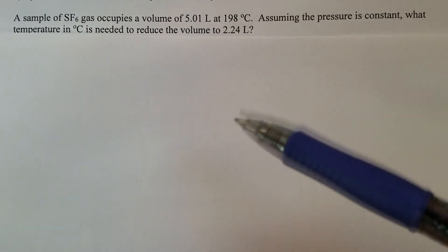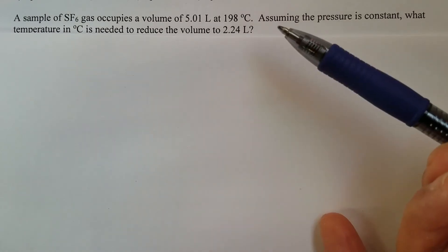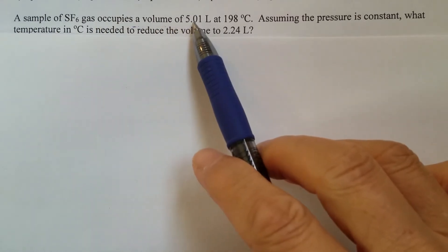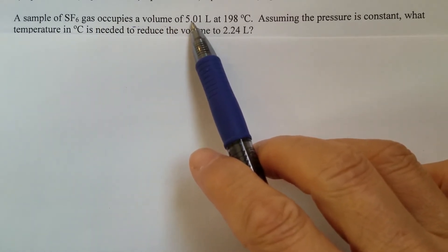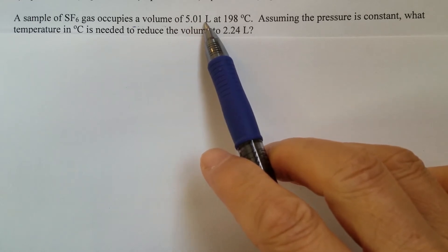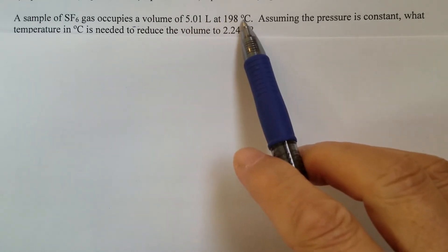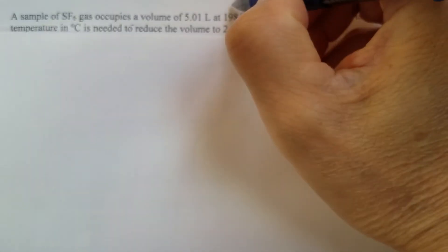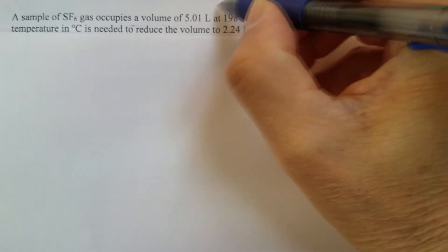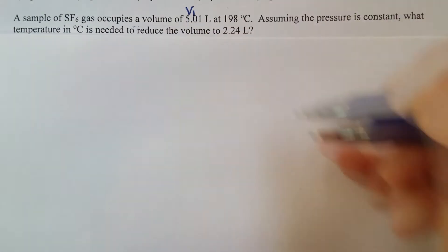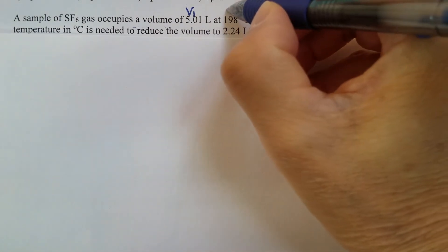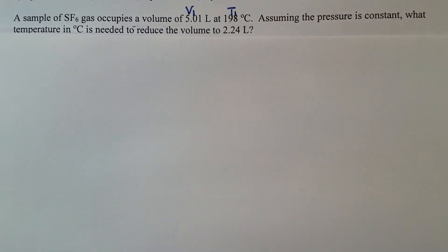Now let's analyze this question. So we have this gas. It occupies a 5.01 liter volume at 198 degrees Celsius. So we can label this 5 liters as V1 and this 198 degrees Celsius as T1.